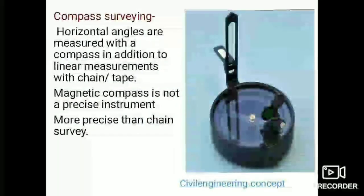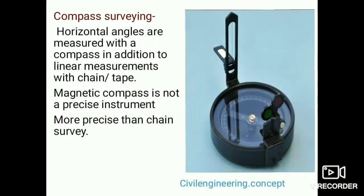In compass surveying, horizontal angles are measured by using a compass. Along with the compass surveying, linear measurements are done by using chain or tape. A magnetic compass is not a very precise instrument, but it is more precise than chain surveying.